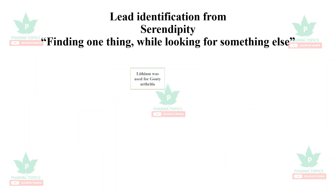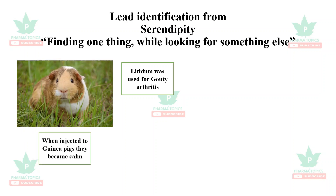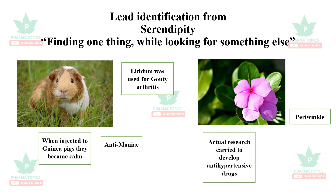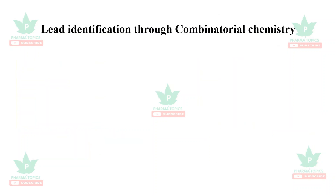Lithium was originally used for gouty arthritis; when injected into guinea pigs, they remained calm, and lithium is now used as an anti-manic drug. Research to develop anti-hypertensive drugs from the periwinkle plant instead resulted in identification of the anti-cancer compounds vincristine and vinblastine, which are vinca alkaloids.